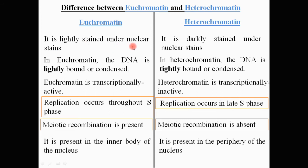Comparing euchromatin and heterochromatin: euchromatin is the lightly stained region under nuclear stains, whereas heterochromatin is darkly stained. Euchromatin is less condensed with loosely bound DNA; heterochromatin has tightly bound, more condensed DNA. Euchromatin is transcriptionally active; heterochromatin is transcriptionally inactive. Replication in euchromatin occurs throughout the S phase, whereas in heterochromatin it occurs in late S phase. Meiotic recombination is present in euchromatin but absent in heterochromatin.